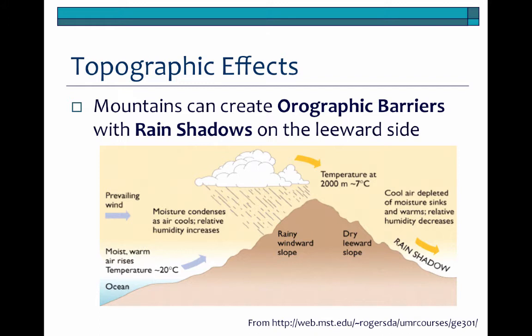Relative to the Great Basin, this is important because the Great Basin is really blocked by the coastal mountains, then the Sierra Nevadas to the west and then the Rocky Mountains to the east. You get that blocking on several fronts, which really limits the amount of storm systems that can get to the Great Basin.